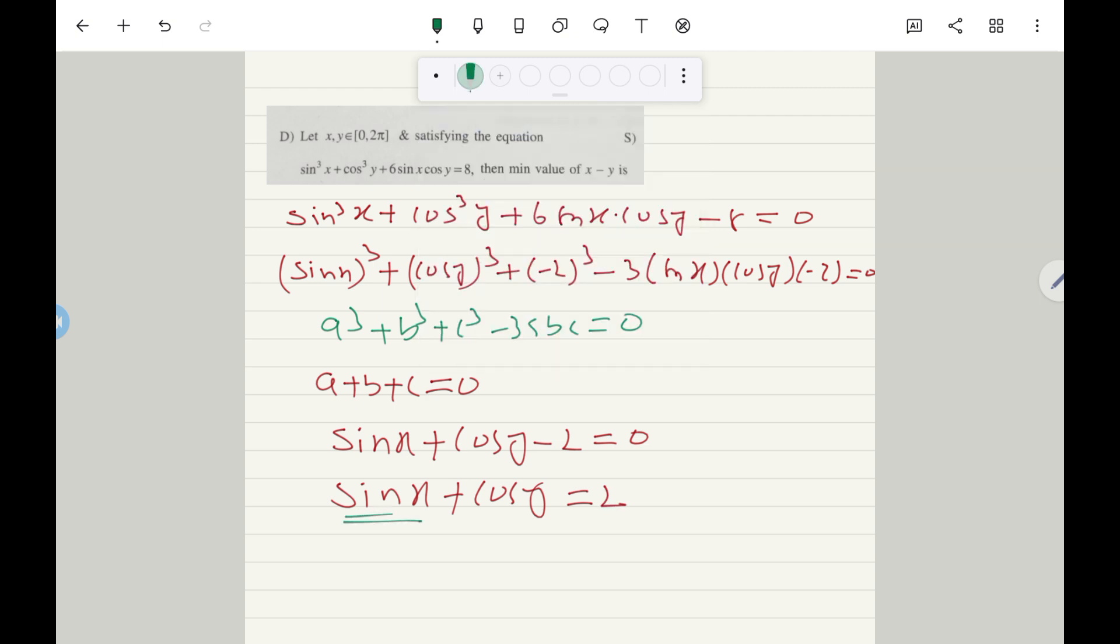sinx maximum value 1, cosy maximum value 1 because here x and y are different angles. So sinx maximum value 1, cosy maximum value 1, so minimum value -1. So their addition should be 2 means indirectly we can say that sinx should be equal to 1 and cosy also equal to 1 at a time.